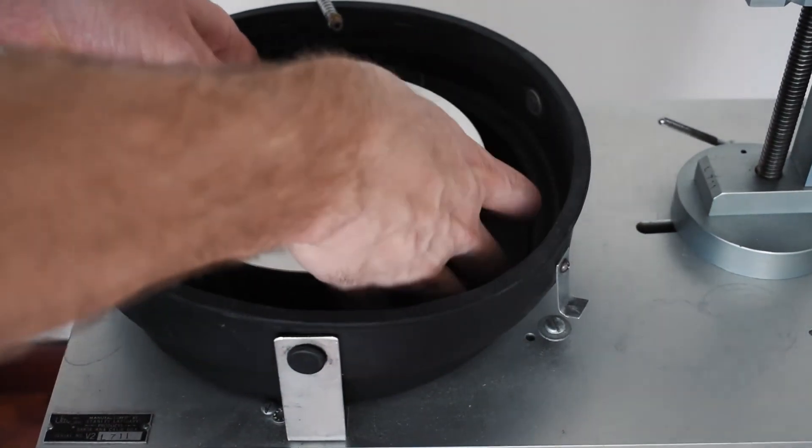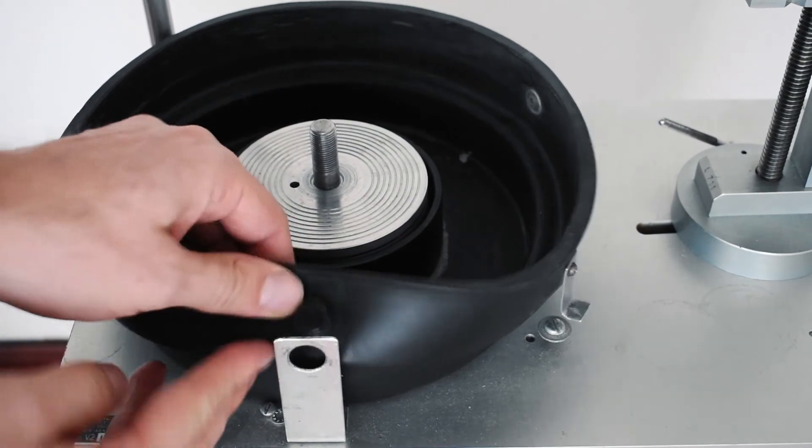Once the lap is removed you can also remove the rubber splash guard in order to easily clean the machine and the guard.